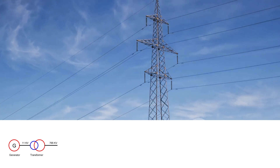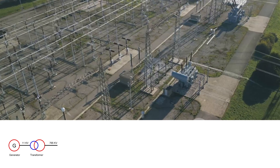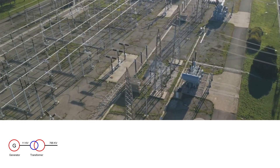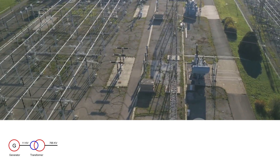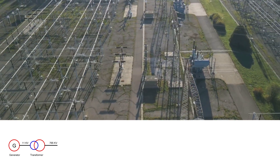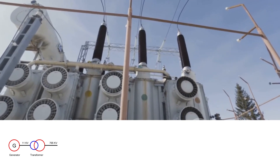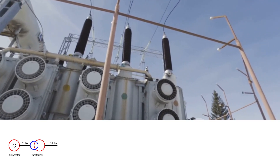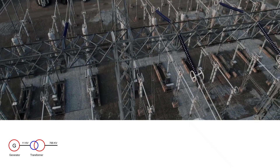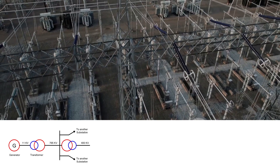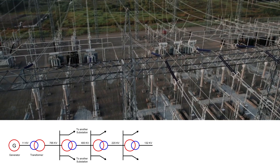Now that the voltage has been stepped up, it enters the primary transmission network, which is responsible for transferring bulk power over long distances. Starting from a generating station, the voltage might be stepped up to 765 kV. Then, as it passes through a series of major substations, it's gradually stepped down — first to 400 kV, then to 220 kV, and eventually to 132 kV.